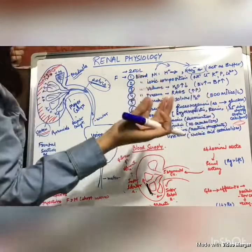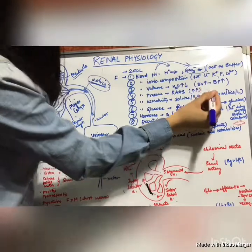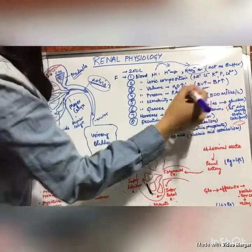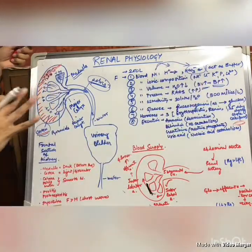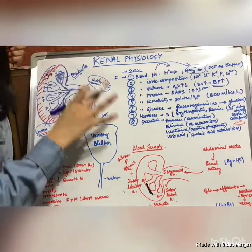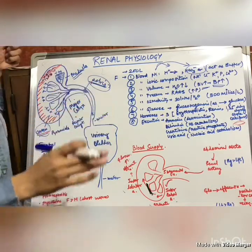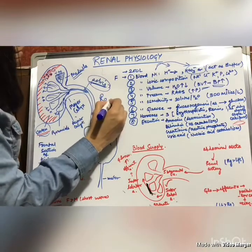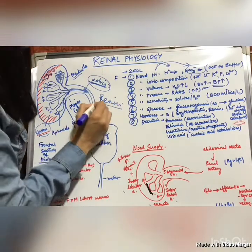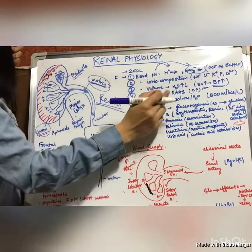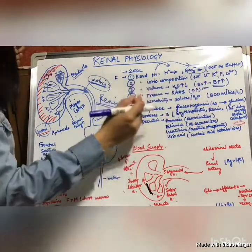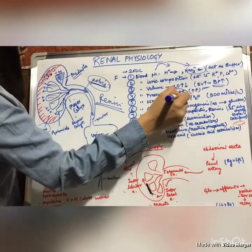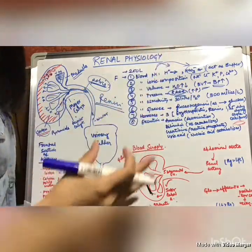If there is more water in the blood, it leads to increased blood volume (BV), which leads to increased blood pressure (BP). The fourth function is blood pressure regulation. The kidney secretes a hormone called renin (R-E-N-I-N), which activates the RAAS — the renin-angiotensin-aldosterone system. The main function of this system is to increase and maintain blood pressure.